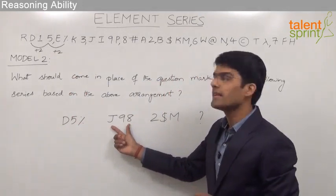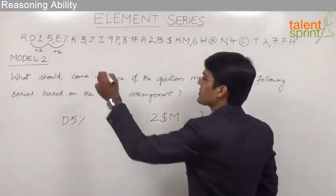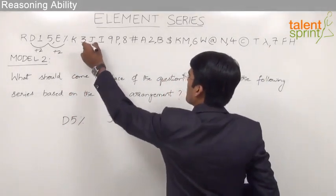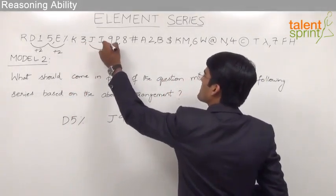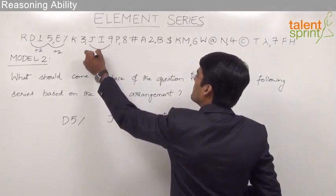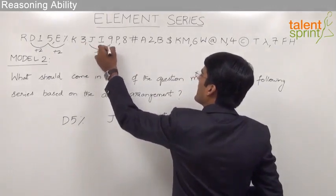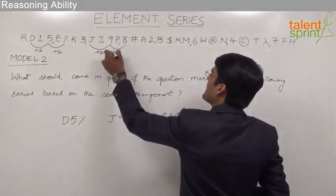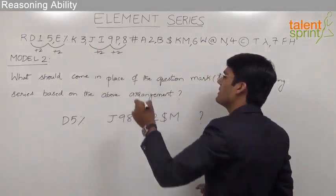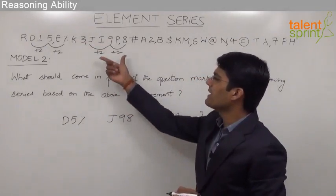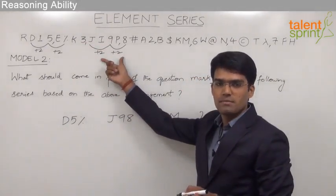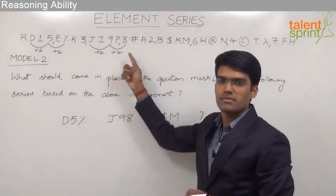Coming to the second triplet: J, 9, and 8. J is in its position, plus two positions away gives 9, and again two positions away gives 8. So between the elements of this set as well, the positioning is +2 and +2.